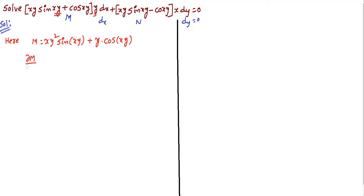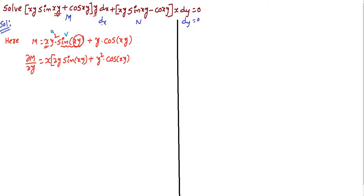First, calculate ∂M/∂y. Knowledge of partial differentiation is very important to solve M·dx + N·dy = 0 equations. Here x is constant, so we apply the UV product rule. Derivative of y²·sin(xy): derivative of y² is 2y times sin(xy), plus y² times cos(xy) times the internal derivative of xy with respect to y, which is x.